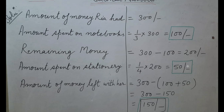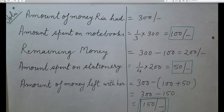She spent 100 rupees on notebooks and 50 rupees on stationery, so altogether she spent 150 rupees. She had 300 rupees, so the amount left with her is 300 minus (100 plus 50), that is 300 minus 150, which equals 150 rupees. We write the answer in a rectangular box. This is how we solve the question.